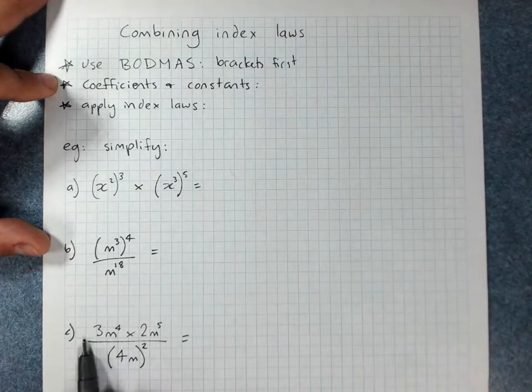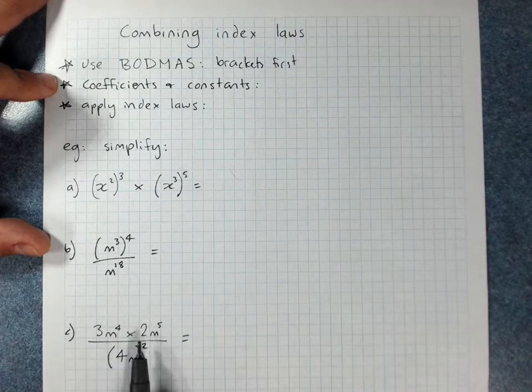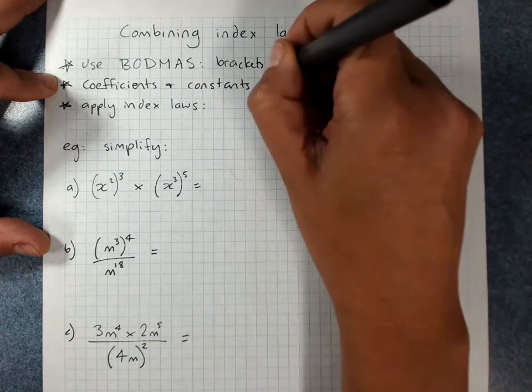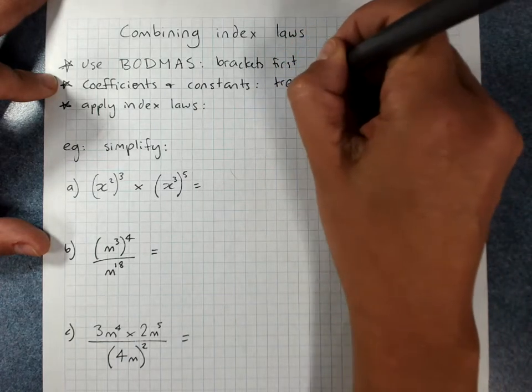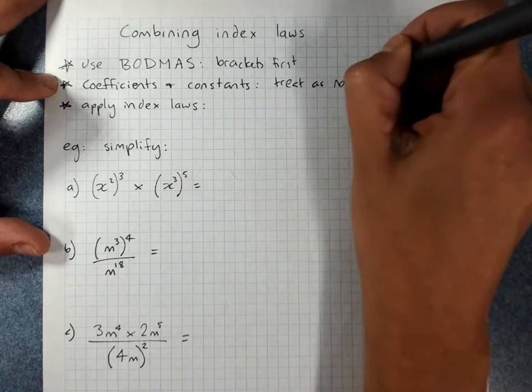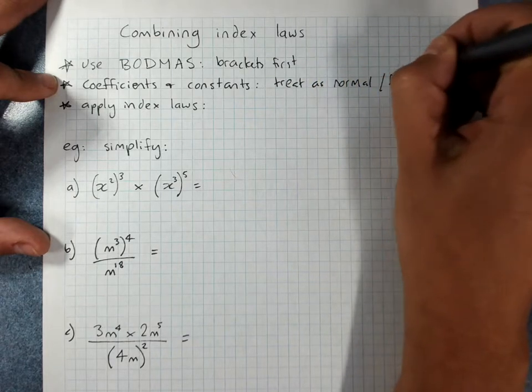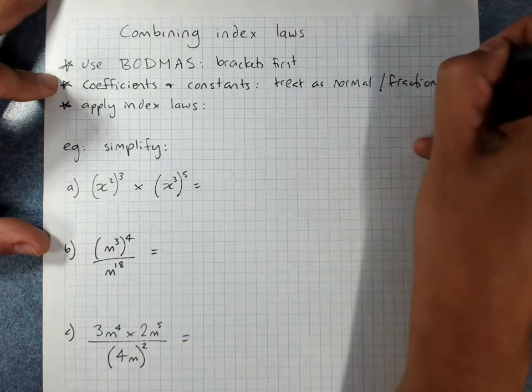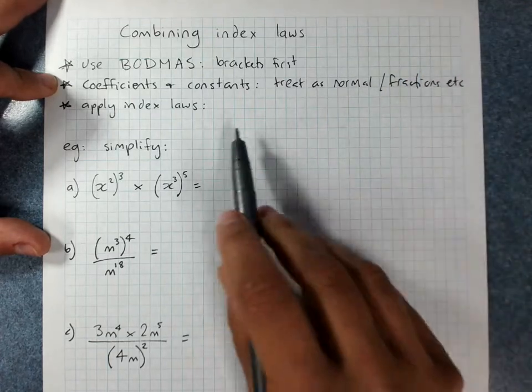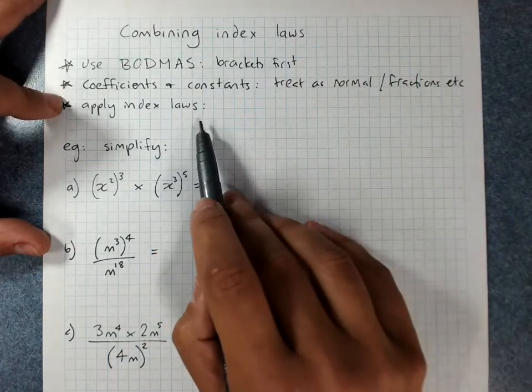So down here, 3 times 2, you just do that as normal 3 times 2, we've got 6. And I'm going to put fractions there and tell you why I said that. Apply the index laws.